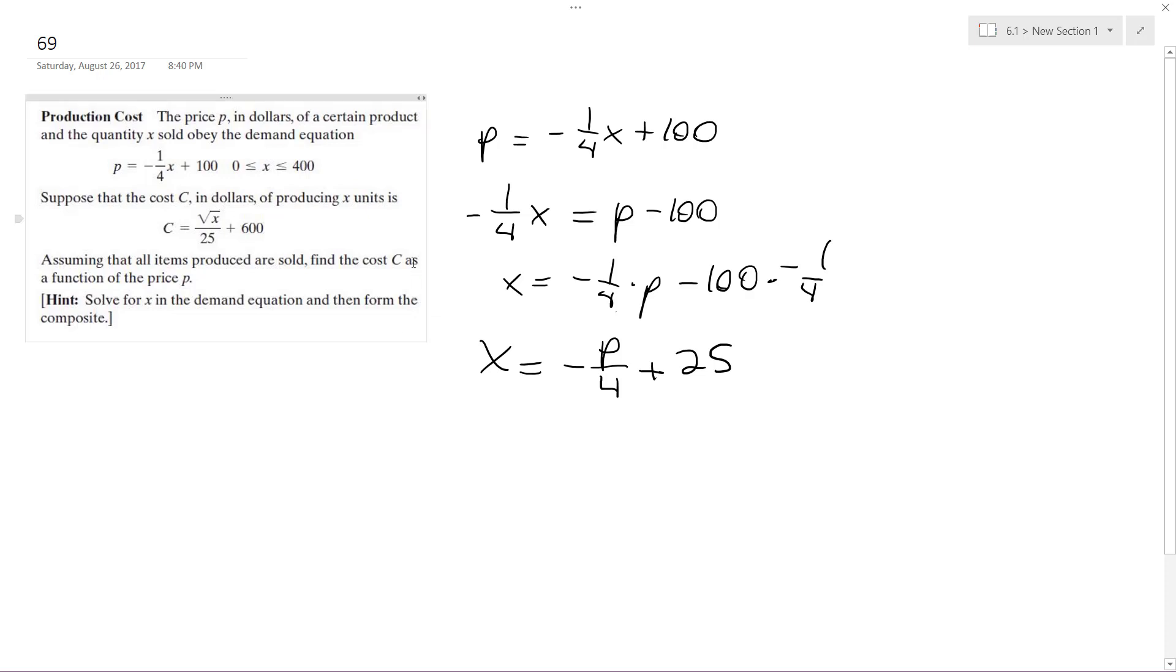I screwed up again. I'm not going to restart this video. Multiply by negative four. So I get x = -4p + 400.